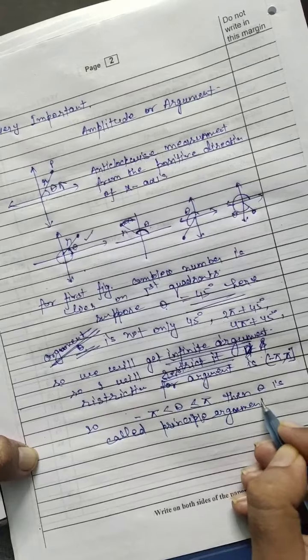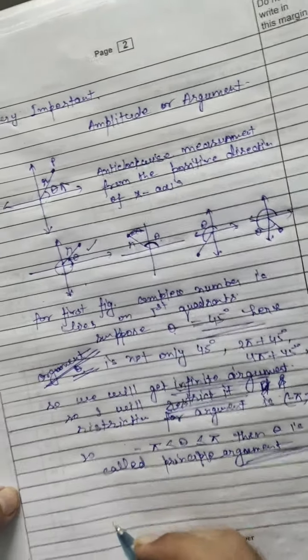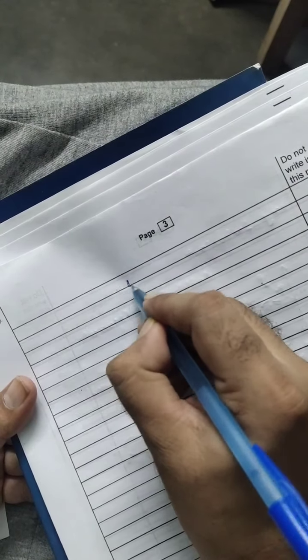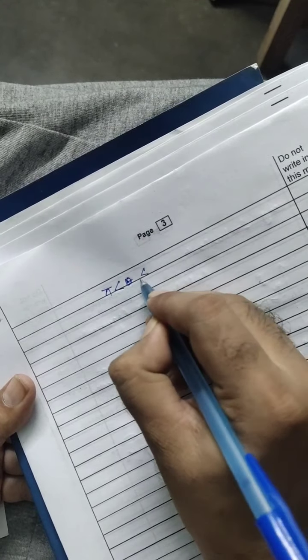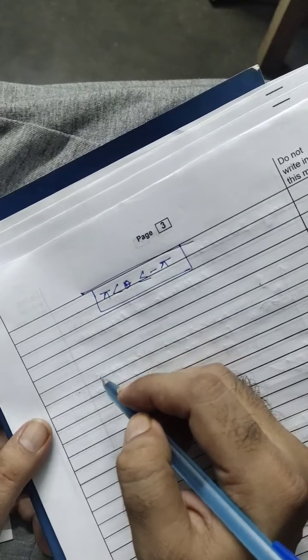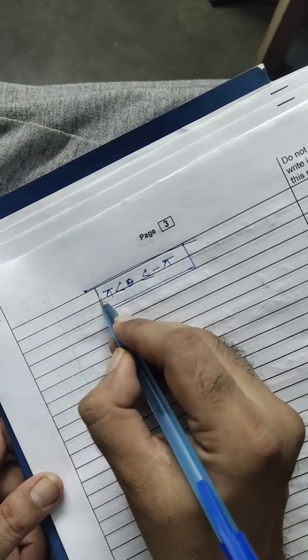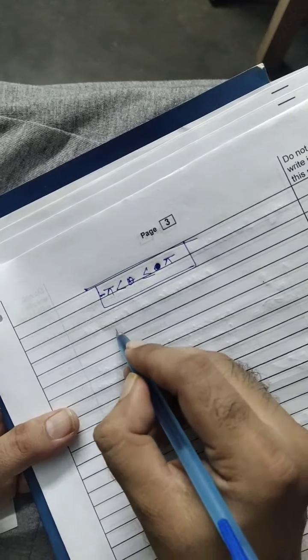The theta is the principal argument — it's a very important portion. So we will every time get theta less than π, but also greater than or equal to minus π. So it is minus π on one side and positive π on the other.